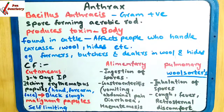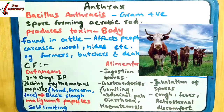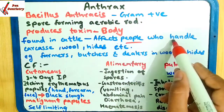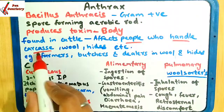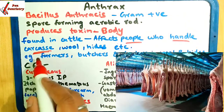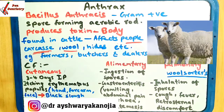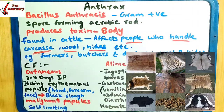Toh Bacillus anthracis kya karta hai, toxicity body mein produce karata hai, jiski wajah se disease hoti hai anthrax. Aur yeh mostly kahan found hoti hai? Mostly yeh cattles mein hoti hai. Aur un people ko affect karata hai jo handle karte hai carcass. Carcass kya hai? Dead animal ke jo bhi products hote hai, jo bhi dead animals hote hai, unko bolte hai carcass. Wool ki production hoti hai sheep se, toh woh ek animal based hai. Aur hides - hides kya hoti hai? Skin of animals.